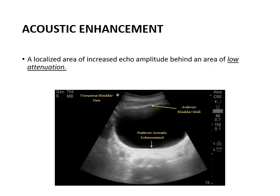Acoustic enhancement is the opposite of shadow. Here the echoes behind an area of interest are bright or higher in amplitude. For example, looking at the urinary bladder, there is an area of increased echo. This happens because sound waves have not lost much energy passing through the fluid-filled structure compared to surrounding tissue, so the returning sound waves have higher energy and are perceived as bright.